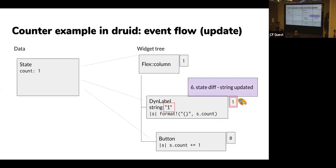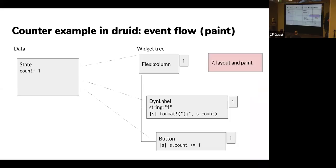We do that same traversal through the widget tree. When we get down to the DynLabel — a label that's dynamic, so the string is run by a closure — when it gets an update it runs that closure, gets a string back, and says 'that string is not the same as the old one, therefore I need to update my appearance.' It sets the paint bit in its widget pod — a request that we need to update that appearance later in the propagation. Then the update phase finishes and all states have been updated to the new application state.